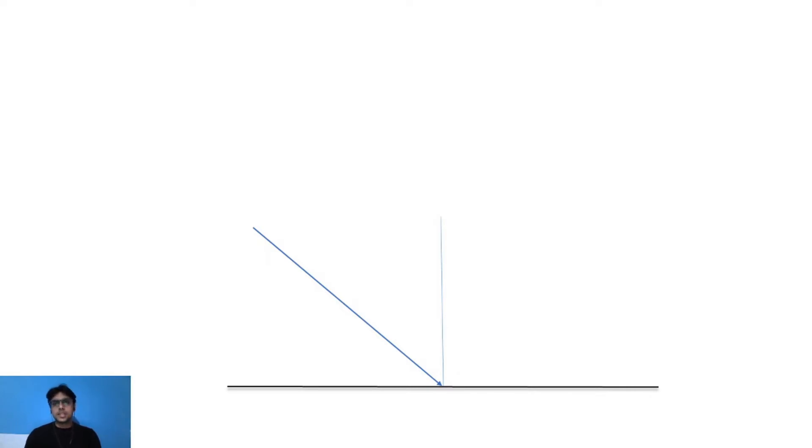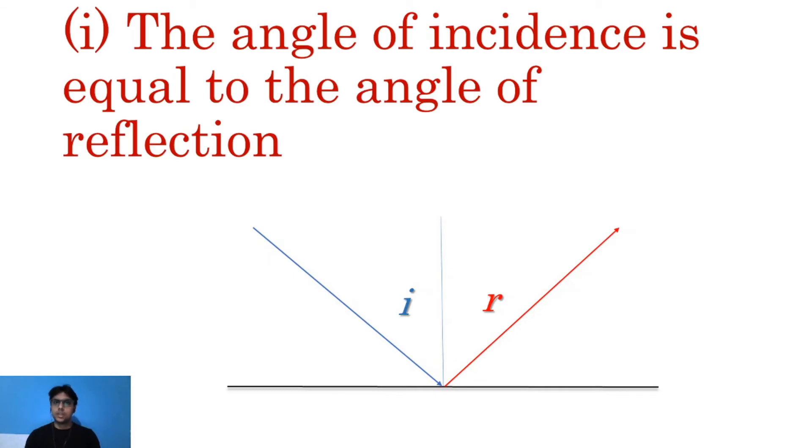Now our incident ray and reflected ray will go in the other direction. So this is simply our first law which states that the angle of incidence is equal to the angle of reflection. It's as simple as that.